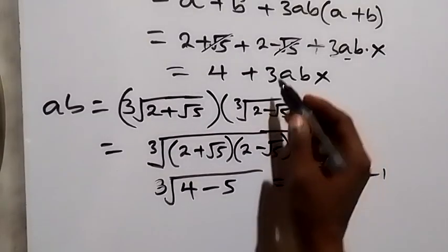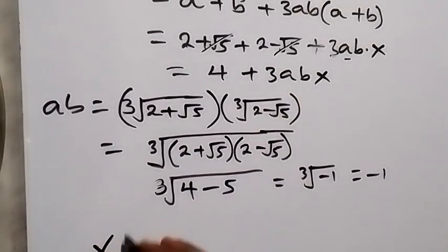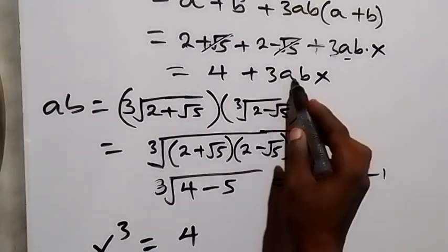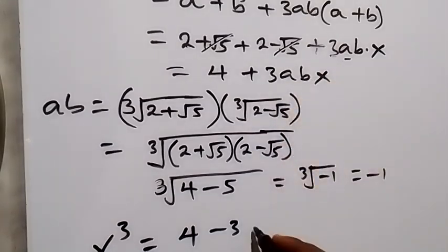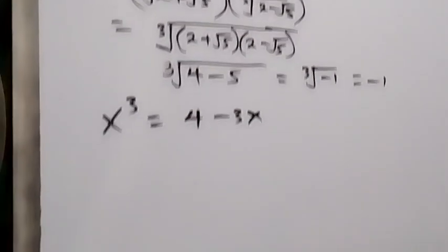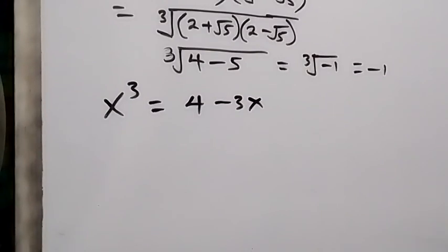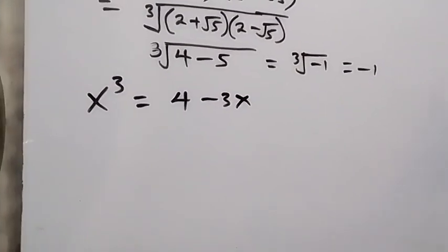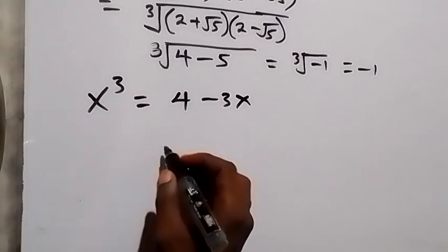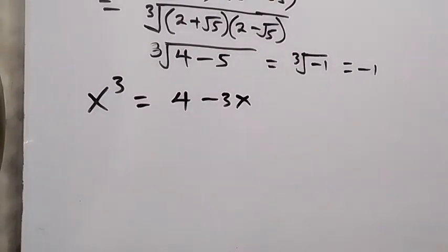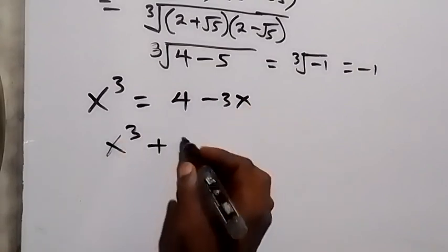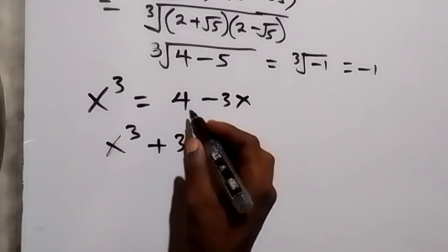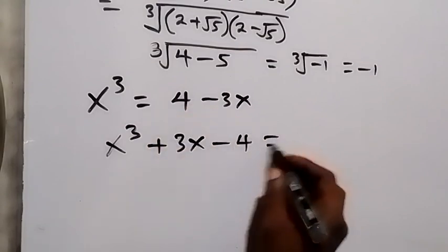Substituting ab = −1, the equation becomes x cubed = 4 + 3(−1)x = 4 − 3x. Moving everything to one side, we get x cubed + 3x − 4 = 0.